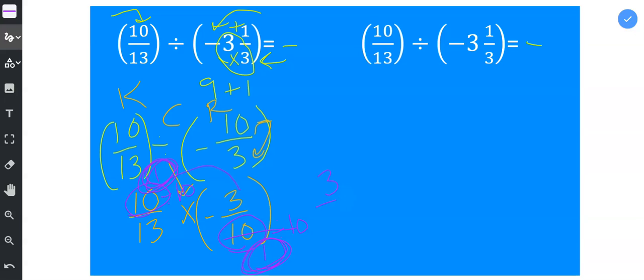1 times 3 gives me 3, and then 13 times 1 gives me 13, and then we already decided that the answer was negative. So this would be negative 3 thirteenths. That would be my answer.